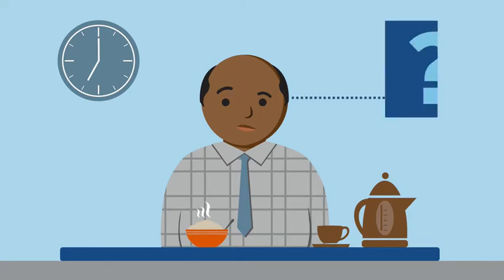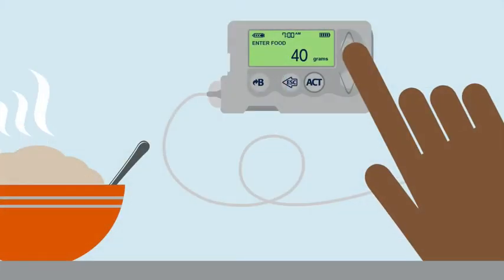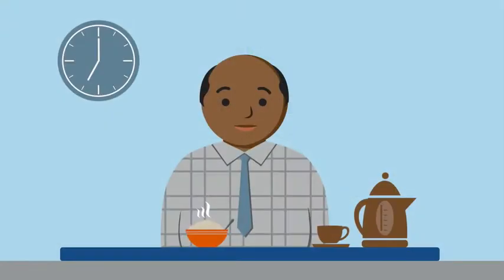Connor tries to remember what his dietician taught him about estimating carbs. He takes a guess at the number of carbs in the bowl of oatmeal and enters it in his new insulin pump. Connor's had his pump for two weeks now and is happy with how much easier it is to give insulin.